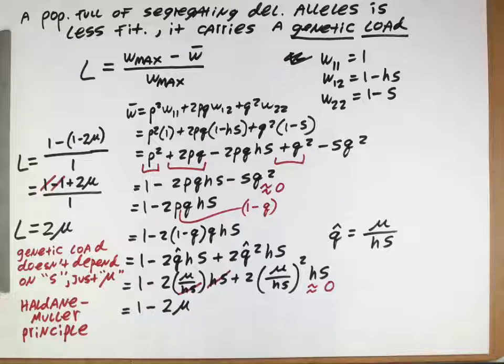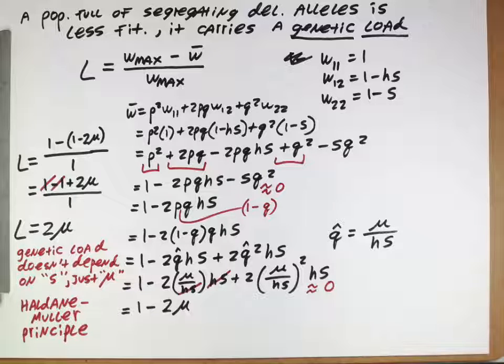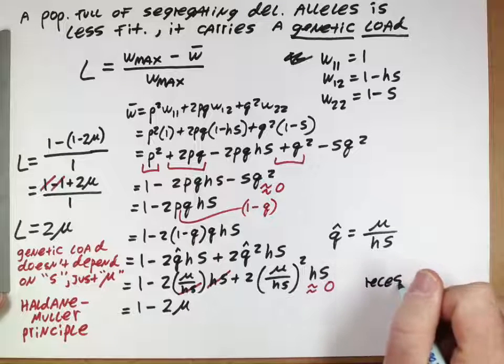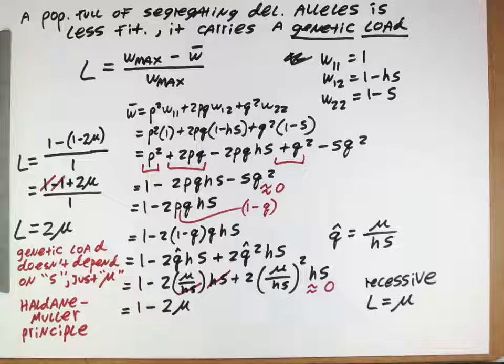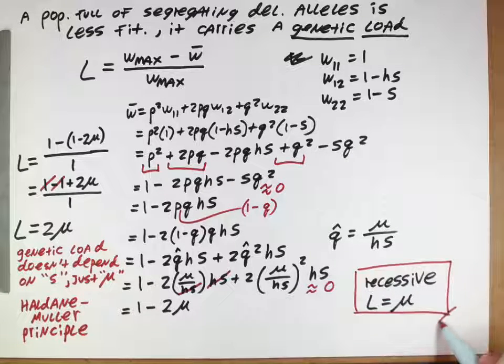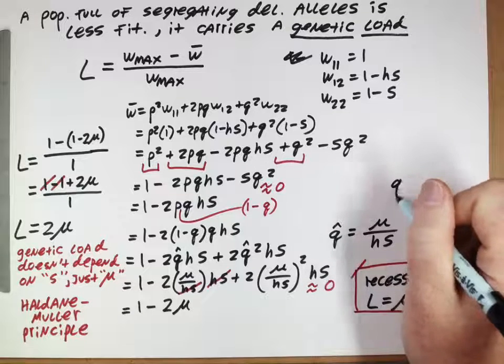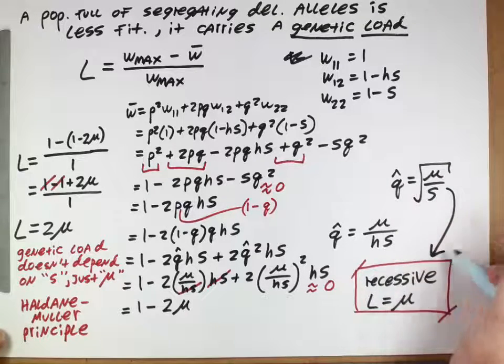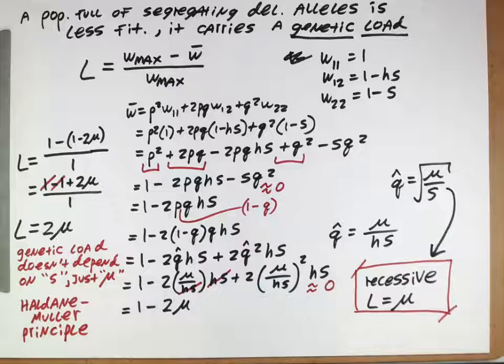And so the only thing that becomes important is how often those deleterious alleles are being produced. And that makes sense conceptually when we think about it, and it's actually demonstrated mathematically here, but when it was first derived it was kind of a surprise. Everybody expected the severity of the mutations to have an influence on the genetic load. Now this is the genetic load for these non-recessive mutations. For recessive mutations, there's a different genetic load that we end up deriving, and that genetic load is actually equal to the mutation rate, not twice the mutation rate. And that's another one of your homework questions, is doing the derivation. And again, following steps like this, but starting off with that different equilibrium frequency for a recessive deleterious mutation and using that to derive this different genetic load. And again, in that derivation that you'll be doing, you won't have to make any of these approximation steps like we did for this non-recessive case.